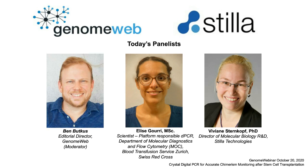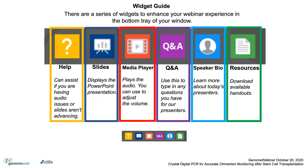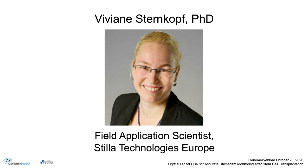Attendees may type in a question at any time during the webinar. You can do this through the Q&A panel, which appears on the right side of the webinar presentation. If you look to the bottom tray of your window, there are a series of widgets to enhance your webinar experience. With that, I'll turn it over to Viviane Sternkopf, Field Application Scientist for Stilla Technologies Europe. Please go ahead, Viviane.